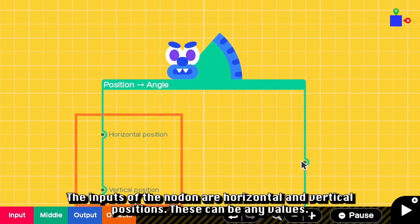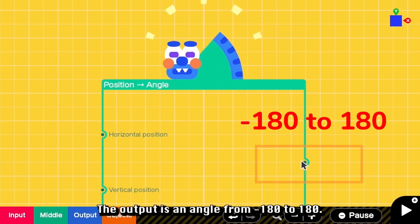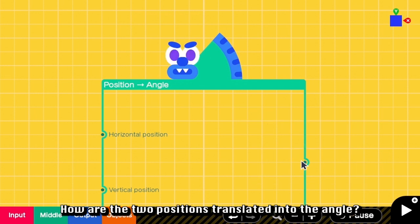The inputs of the Nodon are horizontal and vertical positions, and these can be any values. The output is an anchor from negative 180 to 180. But how are the two positions translated into the anchor?